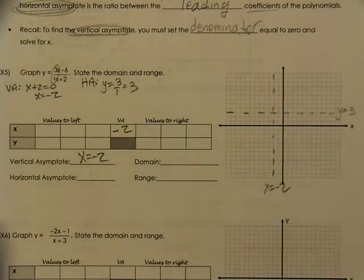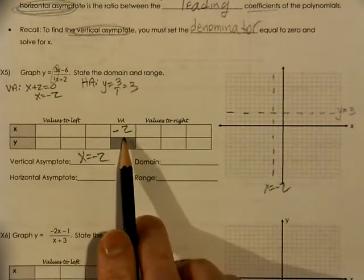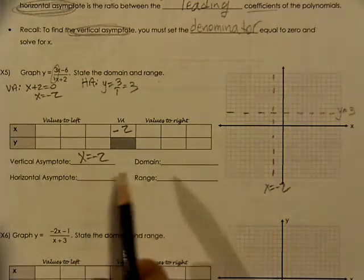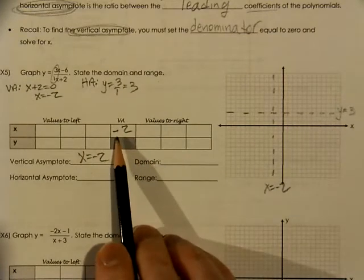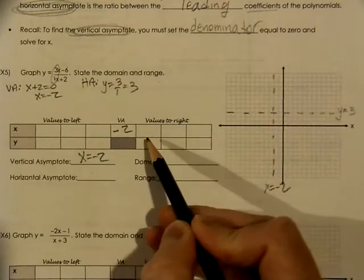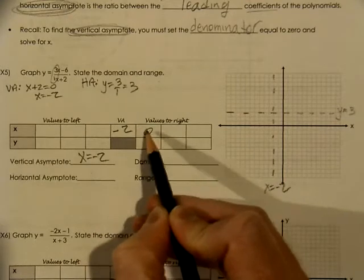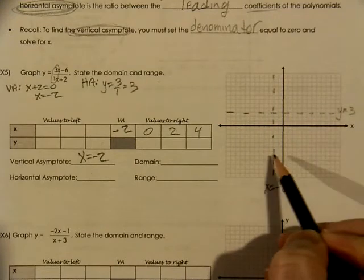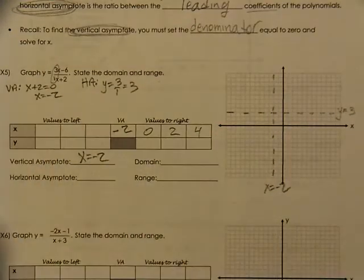Now we are going to look at three numbers to plot on the right side of our vertical asymptote and three numbers to plot on the left side. You can pick any x values you want as long as it is not the vertical asymptote. I suggest spreading those numbers out — going to zero, then two, then four — trying to keep it consistent and symmetrical with the other side.